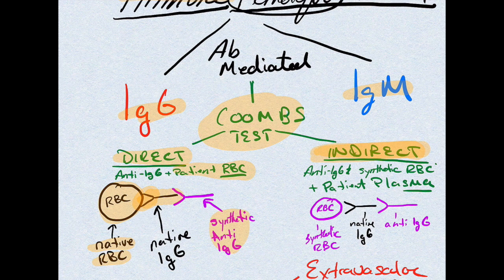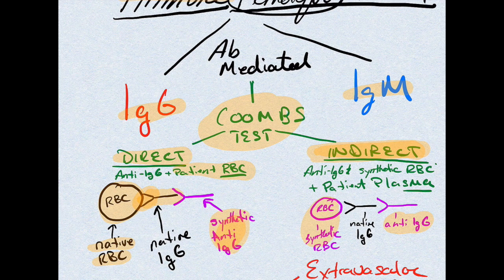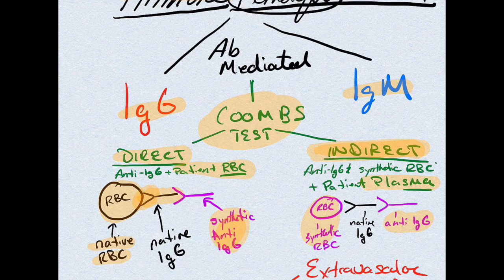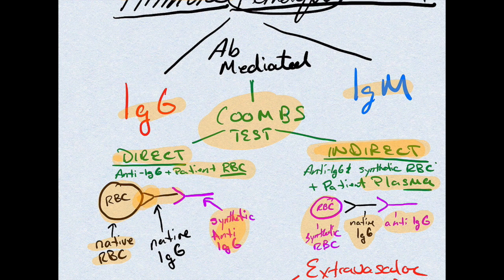In the indirect test, we add red blood cells that do not come from the patient, along with the same anti-IgG. Here we use the patient's plasma, which contains native IgGs. If the patient has produced IgGs that have not yet attached to red blood cells, we can detect them in the plasma. So direct checks directly on the RBC, and indirect checks indirectly through the plasma.